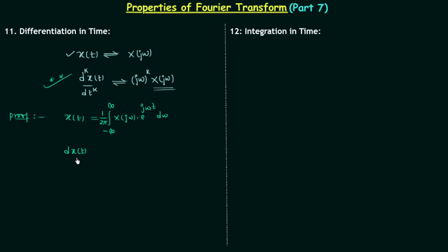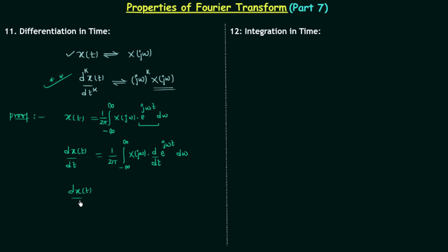On the left hand side we have the differentiation of x(t) with respect to time. On the right hand side, e^(jωt) is a function of time, so we differentiate it with respect to time: (1/2π) times the integration from minus infinity to infinity of X(jω) multiplied by the differentiation of e^(jωt) dω. The differentiation of e^(jωt) is equal to jω multiplied by e^(jωt).